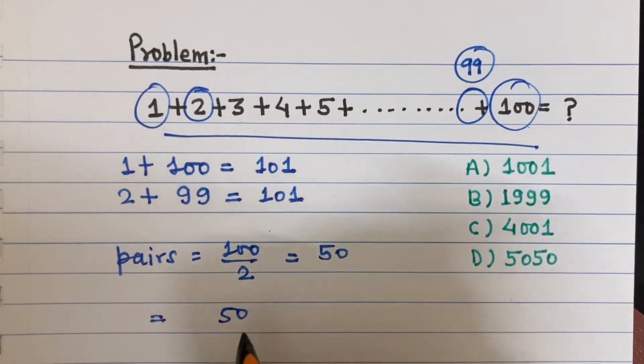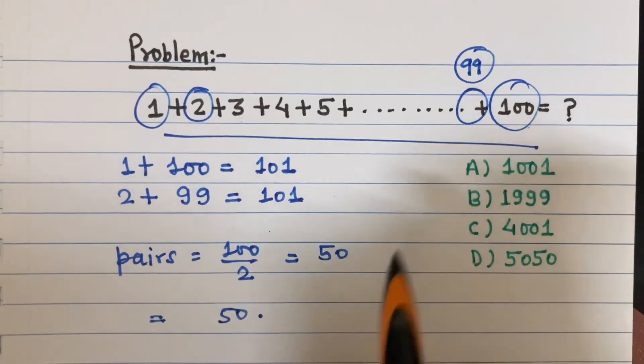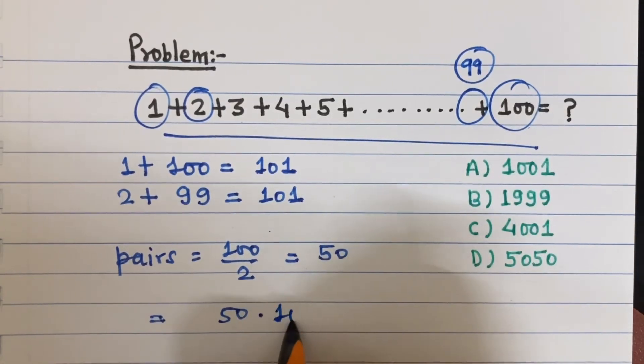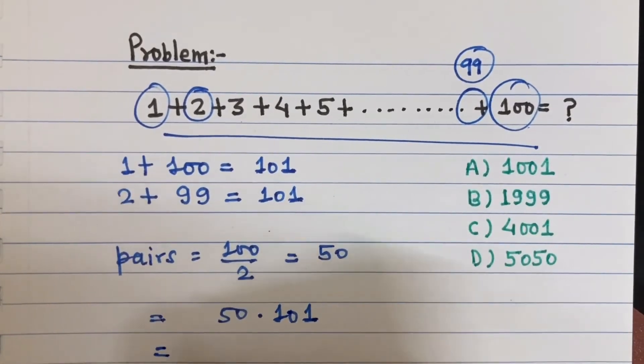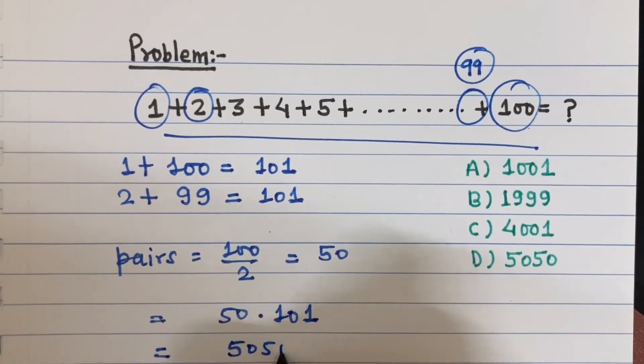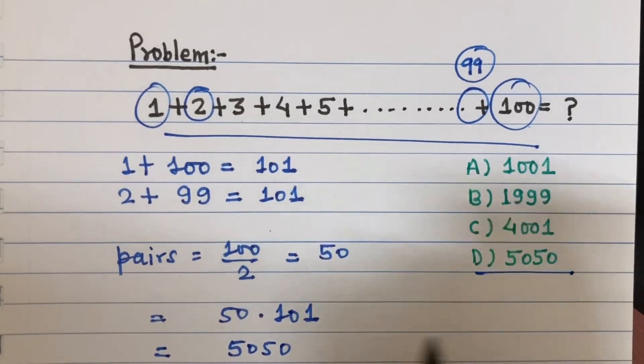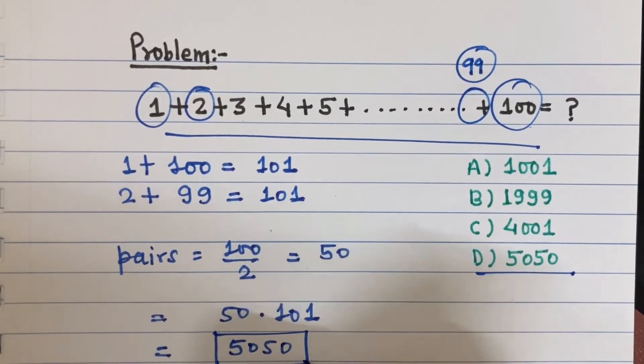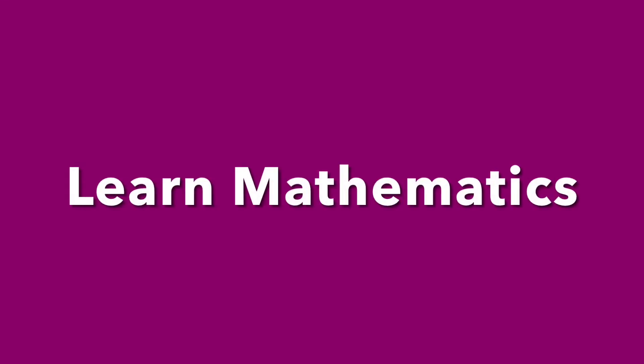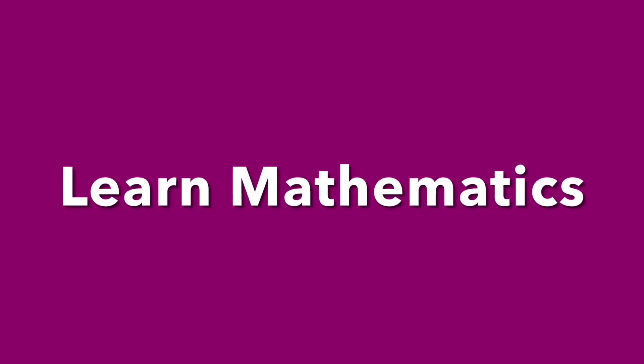The number of pairs, 50, multiplied by the sum of each pair, which is 101, equals 5050. Therefore, option D is the correct answer.